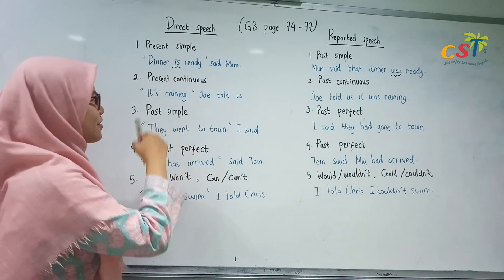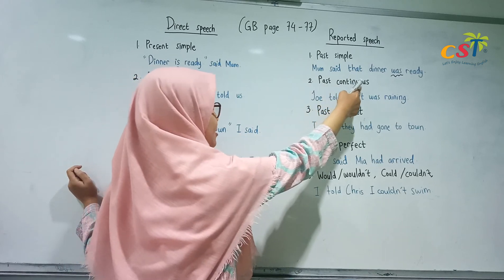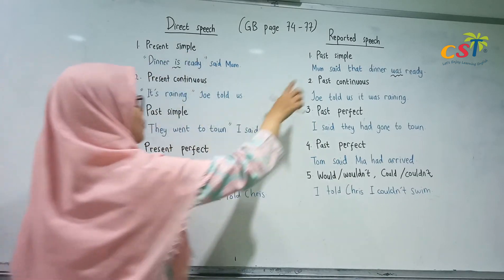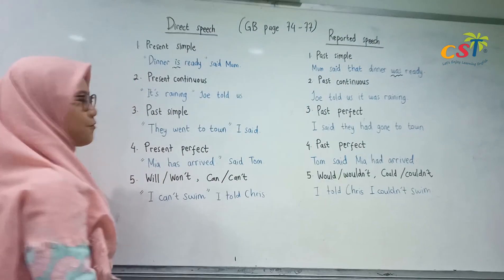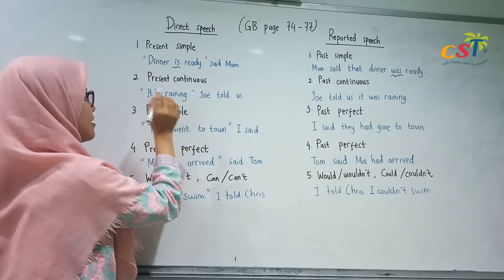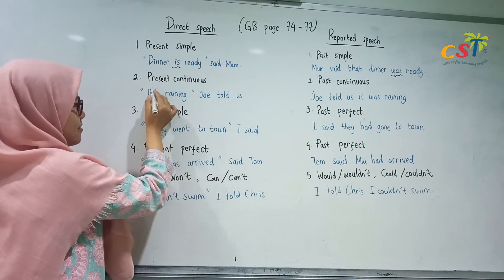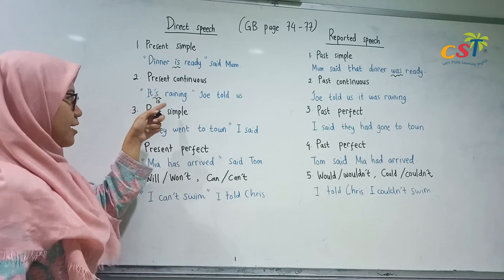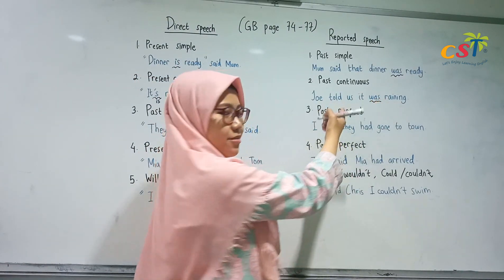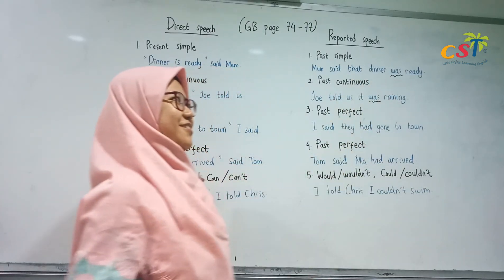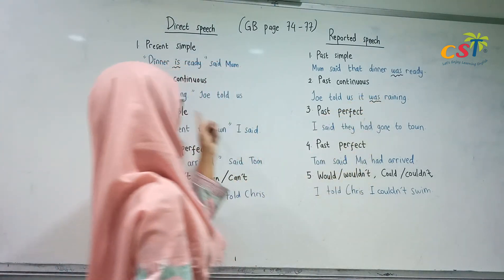Now take a look at the second pattern: present continuous changes into past continuous. For example: 'It's raining.' Joe told us... We can see that it's present from the to-be 'is' — it is raining. So we change the verb into past form: 'Joe told us it was raining.' Just like number one, 'is' changes into 'was.'